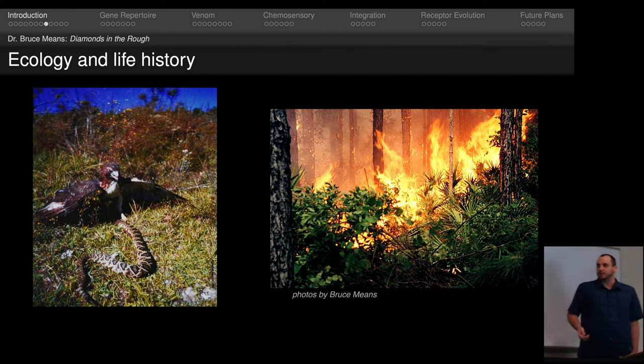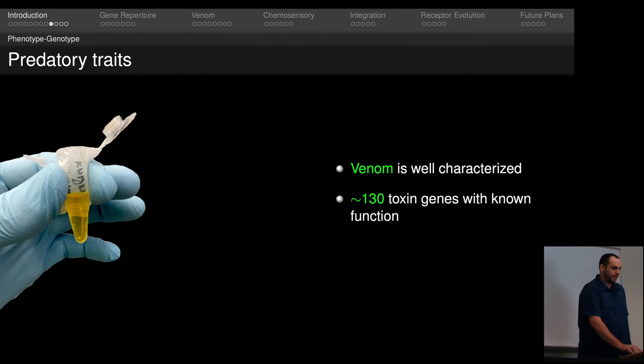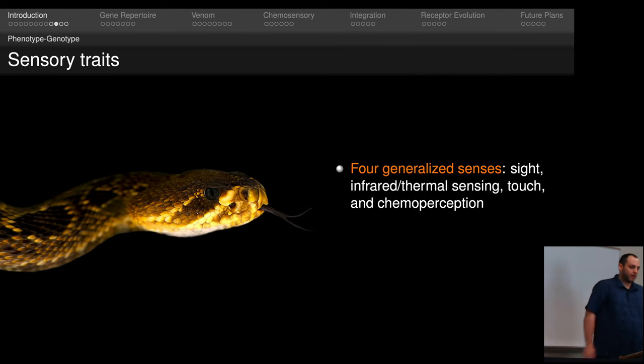And even though they're really successful predators, they still have some natural threats. For example, they have natural predators which include birds of prey, and they're also susceptible to things like wildfires. Returning back to my project, I think the most well-known predatory trait that rattlesnakes have is their venom. We actually have a fairly good understanding of how their venom works. It's well characterized. We know that it consists of around 130 toxin genes, and we have a pretty good understanding of what each of those toxins do individually.